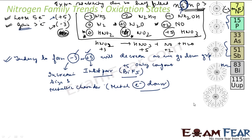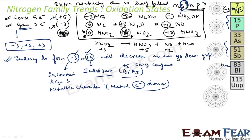The element can also attain stability by losing only 3 electrons, because the ns² orbital is fully filled and thus stable. Therefore the prominent oxidation numbers for the nitrogen family group are -3, +3, and +5. Even losing 3 electrons gives a stable configuration because the last orbital is the fully-filled s orbital.